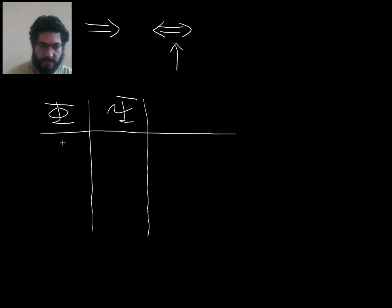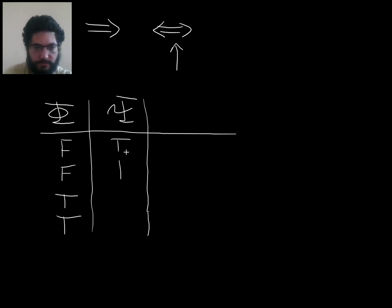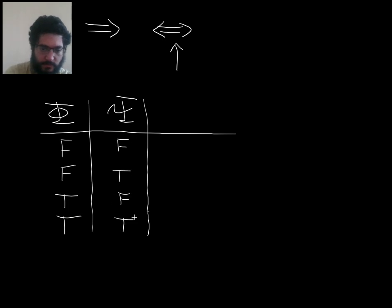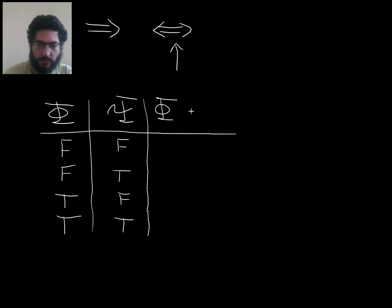For phi and psi, the possibilities are these four. What does that mean for the proposition phi if and only if psi?